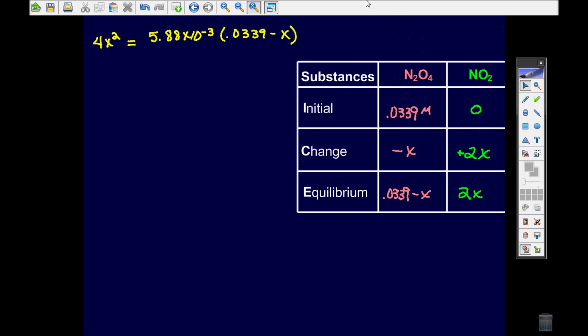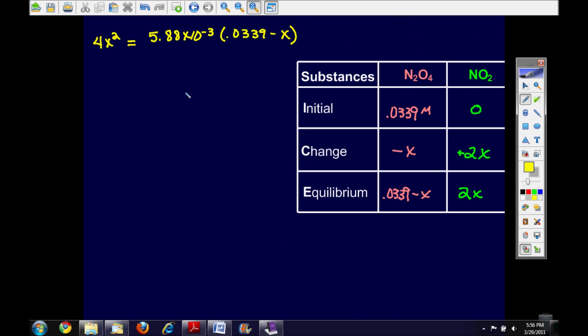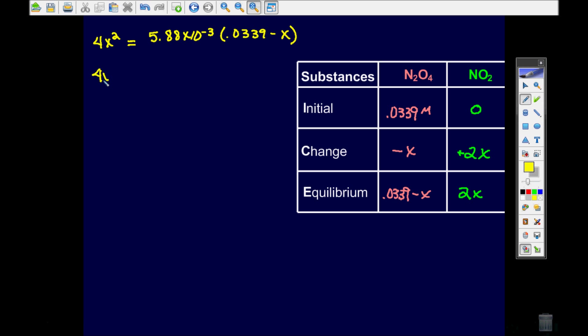So when I simplify this, I'm going to have 4X squared is equal to 5.88 times 10 to the negative 3 times 0.0339 and that's 1.99 times 10 to the negative 4 minus 5.88 times 10 to the negative 3 X. So you should recognize the format here. If you set this equal to 0, that means you move this 4X squared to the other side and make the whole expression equal to 0, you should recognize this formula as the quadratic.